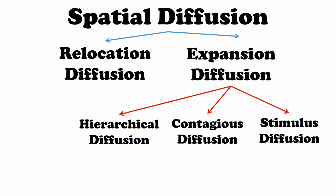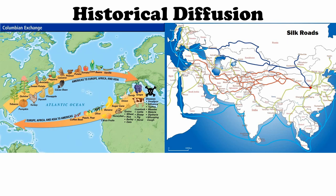Those are our types of diffusion — expansion diffusion has three subsets. Now let's look at historical diffusion. Historical diffusion occurred mostly 400 or 500 years ago with the Columbian Exchange — this movement of goods and ideas from the old world to the new, and from the new world back to the old. They didn't have tomatoes in Italy — how did they make pizza? They didn't have coffee — how did they work? Back in the East, they connected spices and religions along the Silk Road. That's historical diffusion.